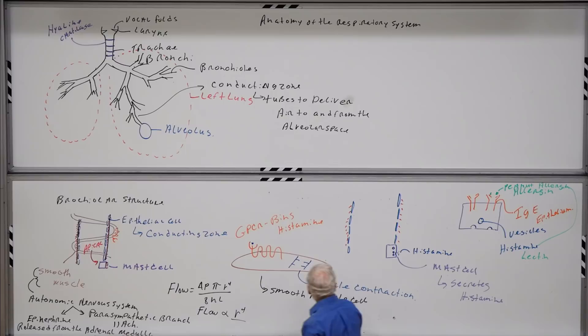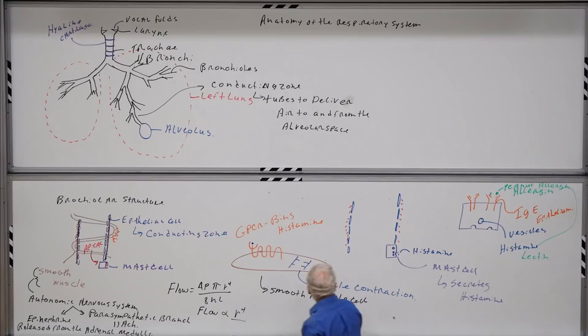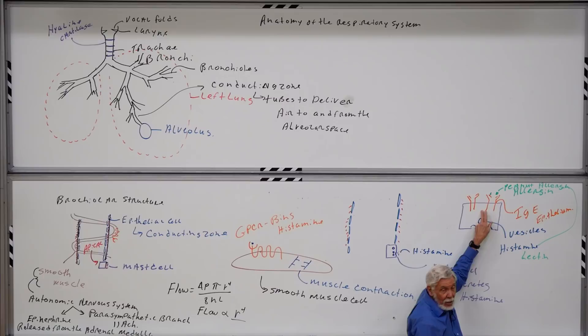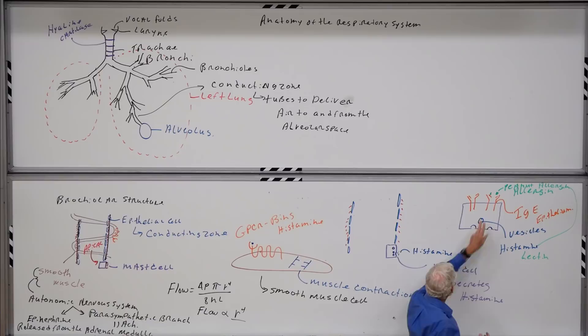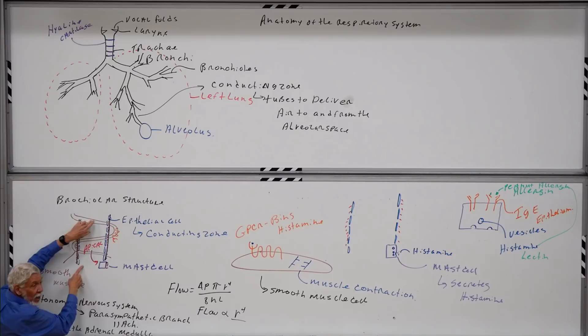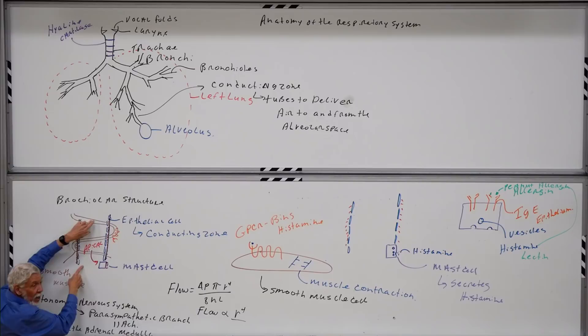How do we tie the autonomic nervous system to something therapeutic? Any of us may know someone with recurrent asthmatic attacks — sometimes it's allergen-driven via the antibody mechanism, and sometimes it's exercise-induced asthma. Breathing fast and cold air increases local inflammation, which leads to histamine release — and once histamine is out, it's the same story: smooth muscle contraction reduces the diameter of these tubes.